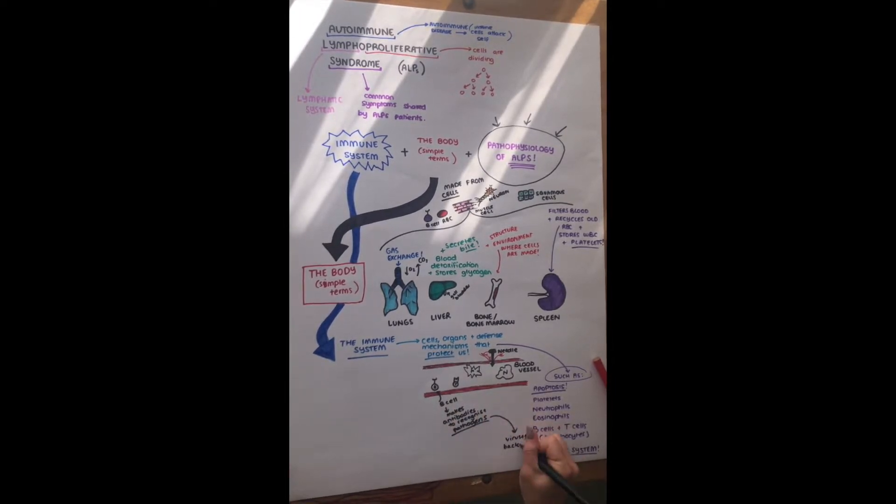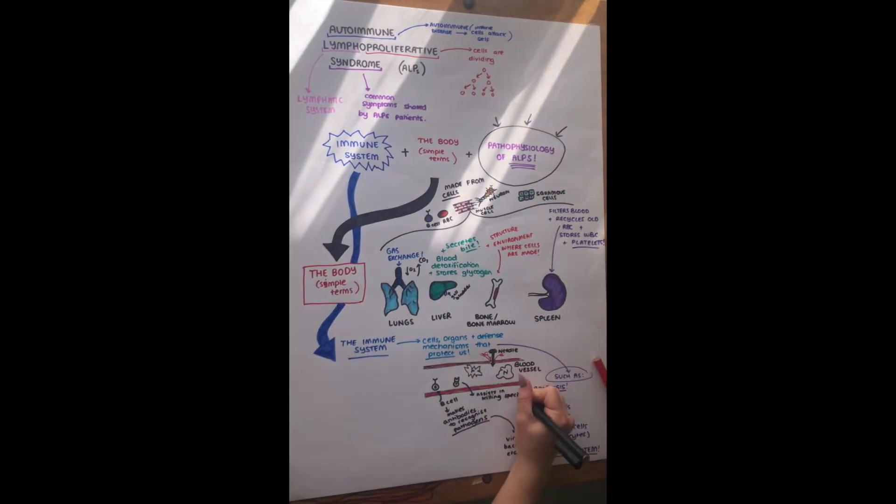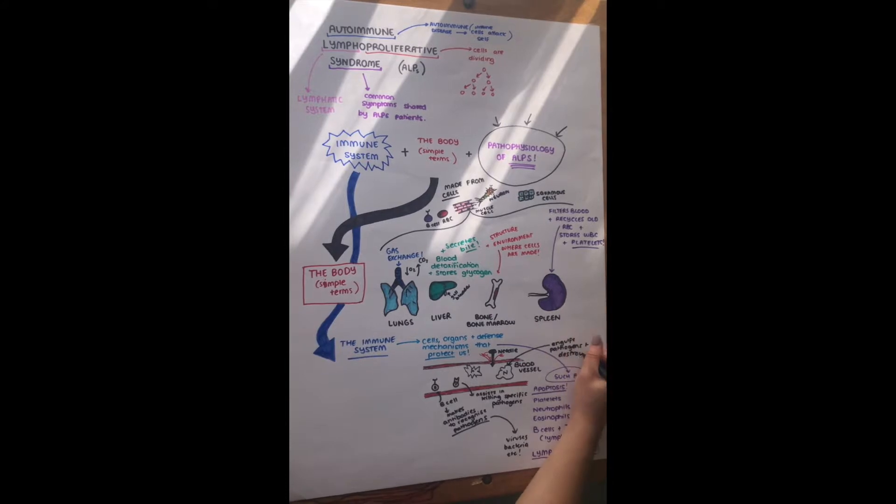And they're involved in recognizing pathogens and assisting in killing them. So pathogens are like viruses, bacteria, anything that can make us sick that maybe we eat or we consume some way. So they assist in protecting us in that way. Also, what I'm now coloring in green is called a neutrophil. And this is a white blood cell, and it engulfs those pathogens and destroys it. So it also helps in destroying those pathogens.